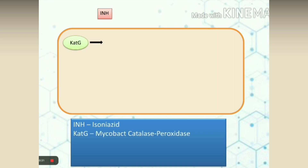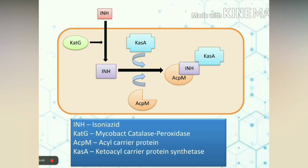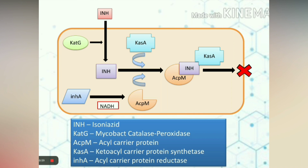Let us see the mechanism of action of isoniazid. Isoniazid is converted by the mycobacterial catalase-peroxidase enzyme, coded by the KatG gene, into its active form. The active form of isoniazid then combines with AcpM (acyl carrier protein) and KasA (a keto-acyl carrier protein synthase) to form a complex. This complex then inhibits mycolic acid synthesis. Another gene, InhA, synthesizes an NADH-dependent acyl carrier protein reductase.